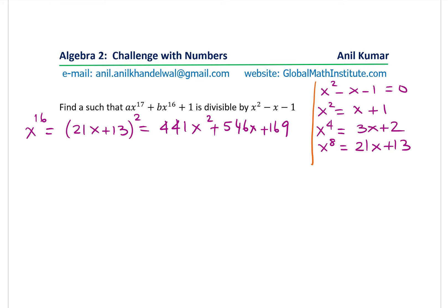Now we can square and simplify this. We know x square is x plus 1. So we'll substitute this value as we did earlier. So we get here 441 times x plus 1 plus 546x plus 169. And that gives you the value 441x plus 546x gives you 987x. And the 441 plus 169, if you add them up, you get 610. So that is what you get x to the power of 16. So we have the value for x to the power of 16 also now.